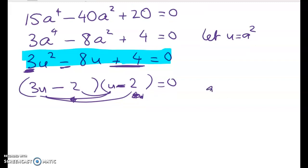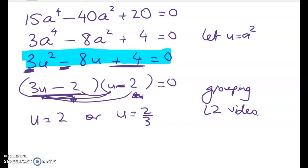The other way to do that is using grouping or the AC method. Again, I've got a level 2 video on that. If you've forgotten how to do that, you really have to have that skill down for lots of things. Quadratics come up everywhere. But because we did this one using guess and check, I'm just going to keep on going. So (3u - 2)(u - 2) = 0, which gives u = 2 or u = 2/3. Either this is 0 or this is 0. But u is a². So a = ±√2 or a = ±√(2/3).